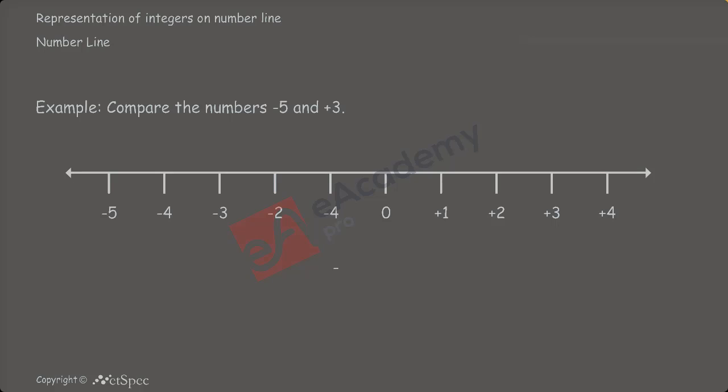Hence, the number minus 5 is less than plus 3. Or, we can also say that plus 3 is greater than the number minus 5. In this way, we can compare numbers using the number line and find out which number is greater than the other.